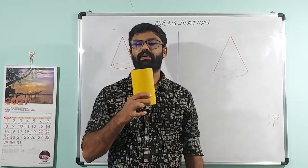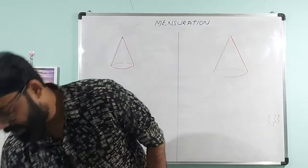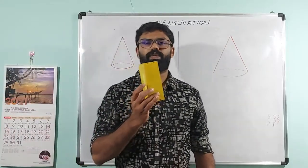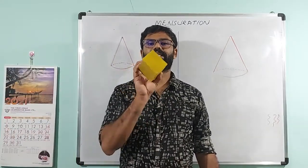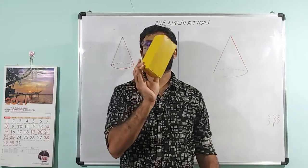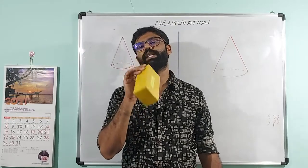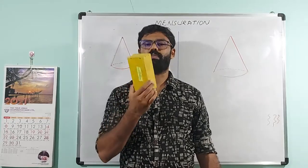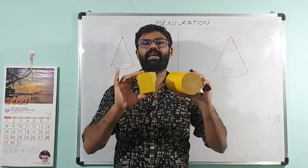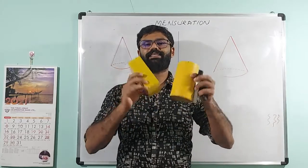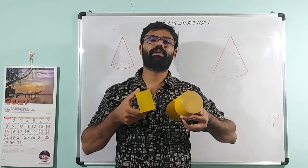A cylinder is similar to a rectangular prism — it's a rectangular block, also called a cuboid. These are the end faces.